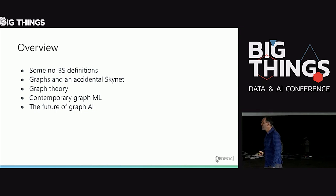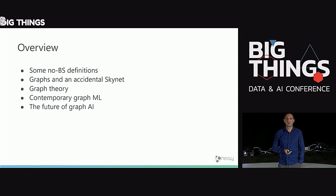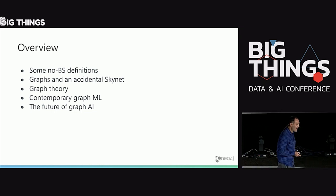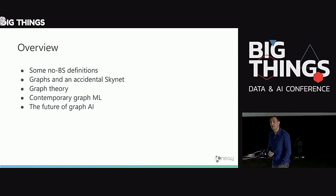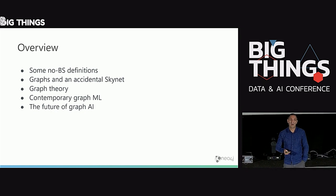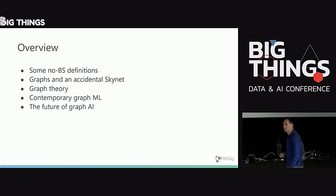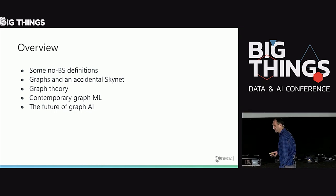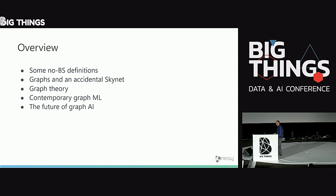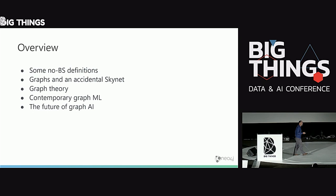I'm going to talk about graphs and my first experiences in building systems that seemed intelligent — how I once thought I'd built Skynet. And I hadn't built Skynet, it turns out. But it was a bit scary and wonderful. Then I'm going to talk about graph theory. We have a bunch of tools already available from 300 years of mathematics in graph theory that enable us to build systems that seem intelligent, before we even reach for fancy data science toolkits. We'll then step it up and look at contemporary machine learning and take a look forward into the future of graphs and AI.